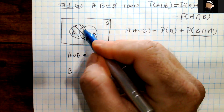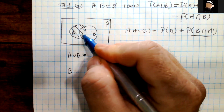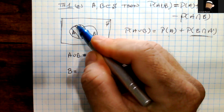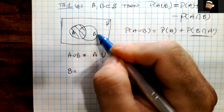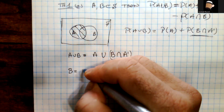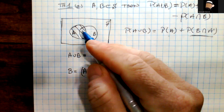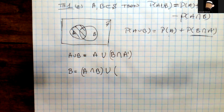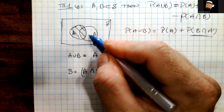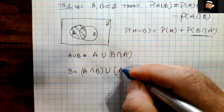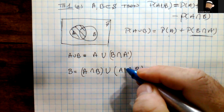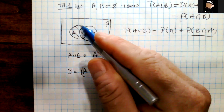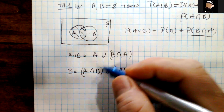We can write B as (A ∩ B) union (A-complement ∩ B). A ∩ B is the overlapping part, and A-complement ∩ B is the part of B that is outside A. Together they recover all of B. Note that A ∩ B is the same as B ∩ A by the commutative property of set intersection, and the same holds for the complement version.